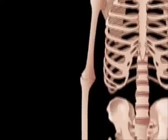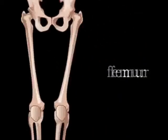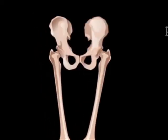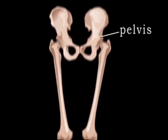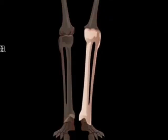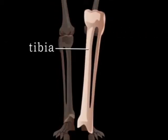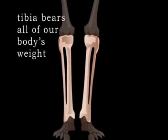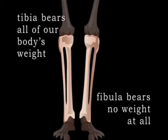The longest, heaviest, and strongest bone in the body is the femur, commonly called the thigh bone. At one end it is connected to the pelvis, and at the other end to the lower leg, which is made up of the tibia, or shin bone, and fibula. The tibia bears all of our body's weight; the fibula bears no weight at all.